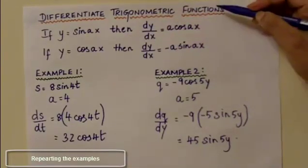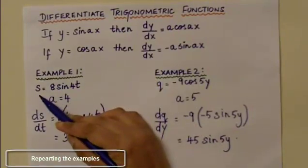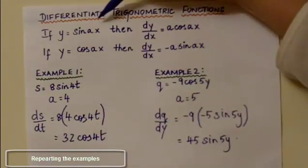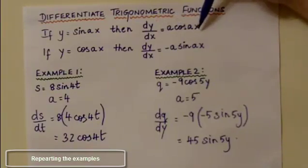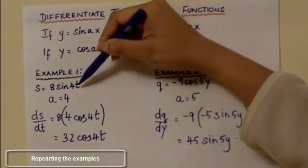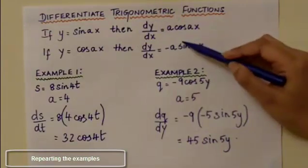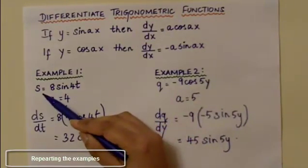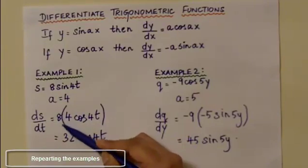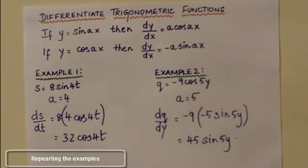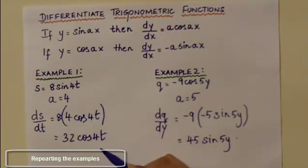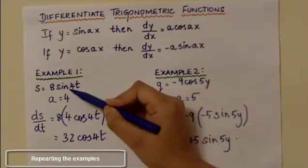Repeating Example 1: s equals 8 sin 4t. The formula used is dy over dx equals a cos ax. The coefficient of the variable t is 4, so a equals 4. Substituting: ds over dt equals 8 times the differentiation of sin 4t, which is 4 cos 4t. So 8 times 4 equals 32 cos 4t, which is the differentiation of 8 sin 4t.